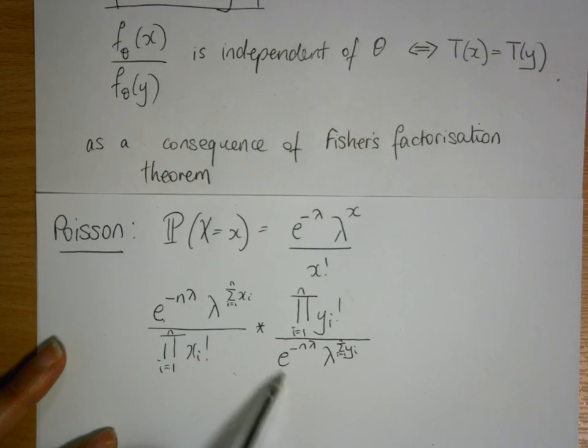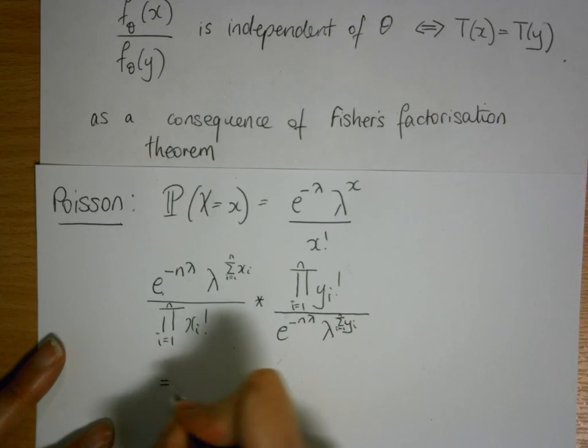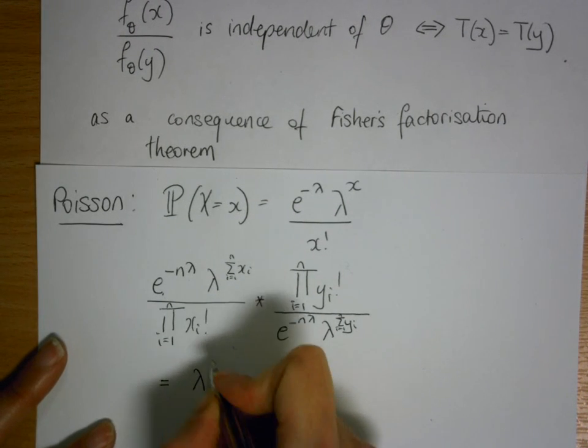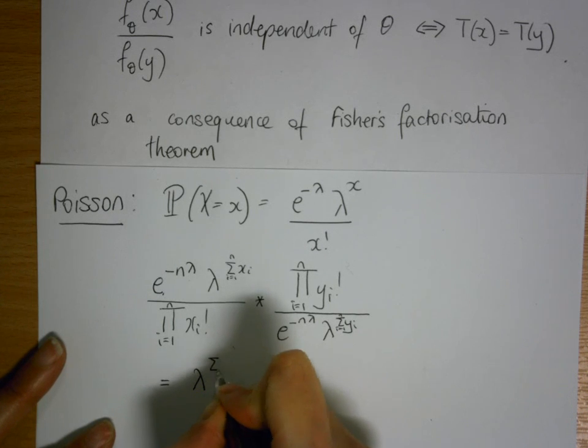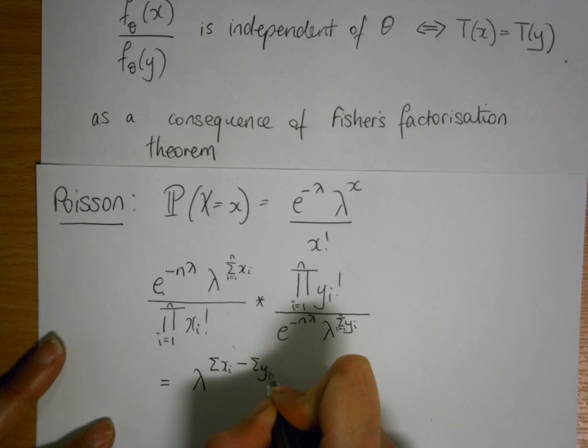The e to the power of n lambdas or minus n lambdas cancel each other out. So you get lambda to the sum of xi minus the sum of yi.